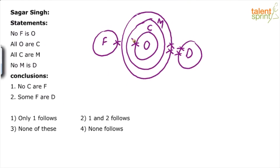Here's the basic diagram. And according to the basic diagram, no C are F is true because C and F do not touch each other. But like I've told you, when a conclusion satisfies the basic diagram, you have to verify the other possible diagrams as well.